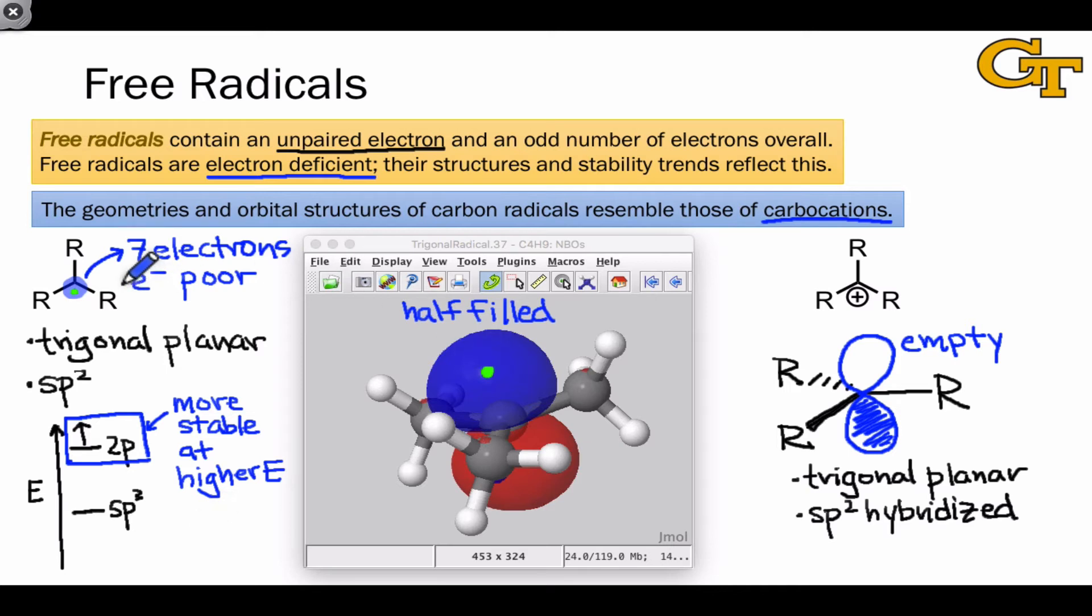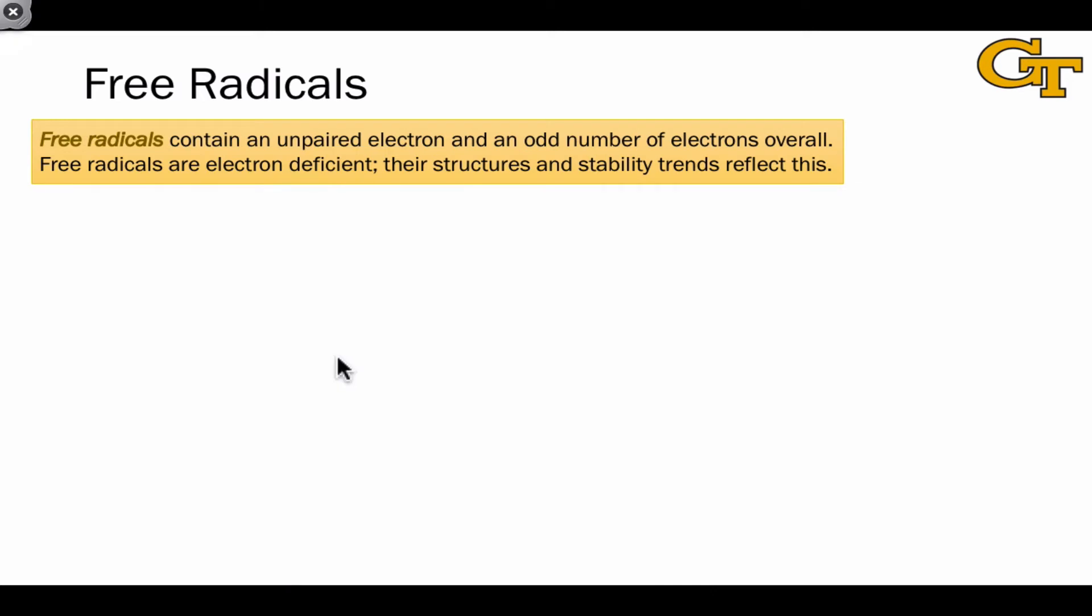And because radicals are electron-deficient or electrophilic, their stability trends reflect electron-deficient species like carbocations, and more generally, empty molecular orbitals. In carbon radicals that don't contain 3 r-groups linked to the carbon center, the radical electron doesn't really have the option of occupying a p orbital, as we'll see. So in these cases, the radical electron must be in an sp or sp2 hybrid.